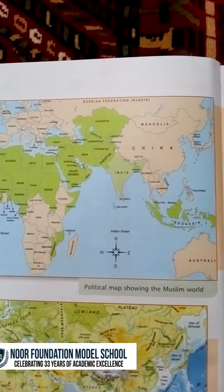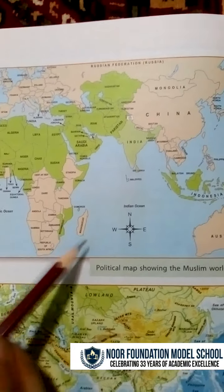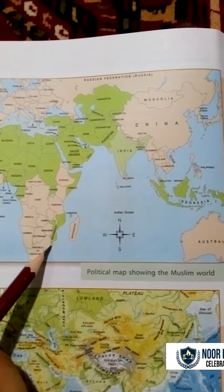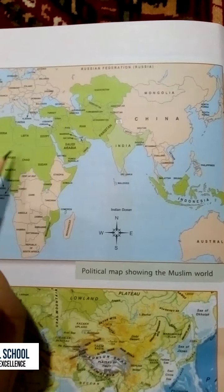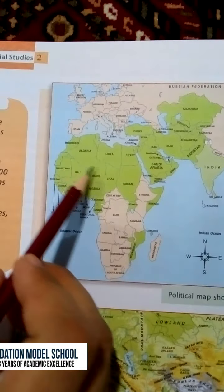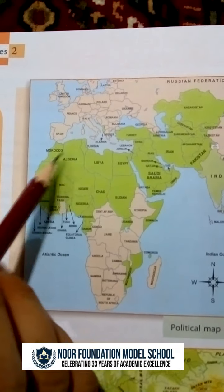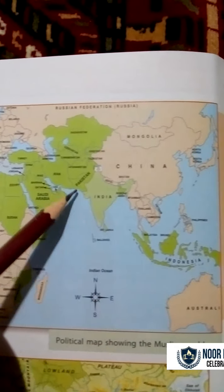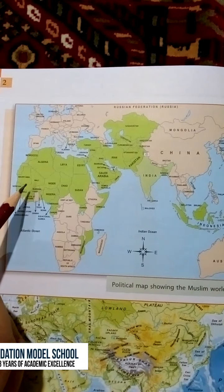These are the two maps given in your book. This is the political map showing the Muslim world. See the countries that are in green color — they are all the Muslim countries. Just carefully see.